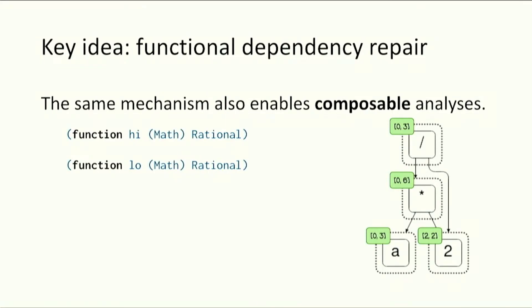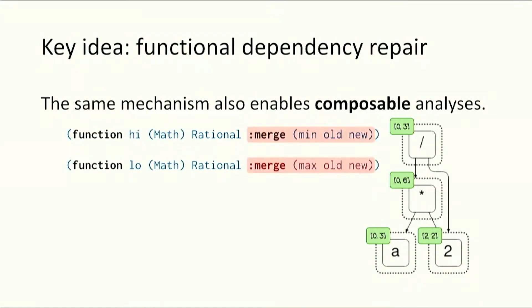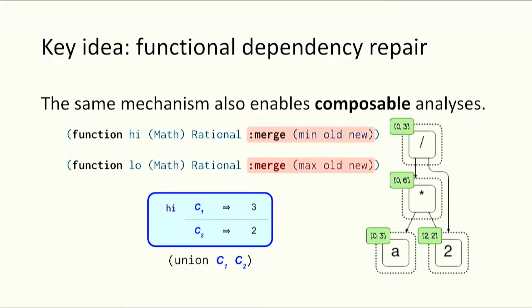This idea of functional dependency repair is very powerful. The same mechanism allows us to express composable program analysis. eClass analysis annotates each eClass with an abstract value; in egglog, we use a function from expressions to the abstract value, and annotate each function with a merge expression that tells egglog what to do when a functional dependency is violated. Suppose we track the upper bound of an eClass and merge C₁ and C₂. C₂ is canonicalized into C₁, causing a violation where C₁ maps to both 2 and 3. The merge expression resolves this by calling min on the conflicting values, giving the new upper bound.